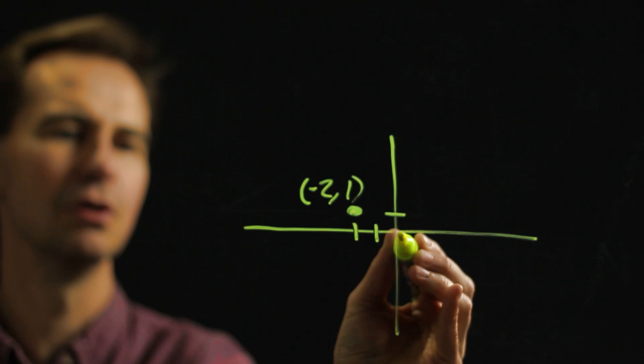So let's say we have a grid and let's say we have a couple of points on this grid. Maybe one of them is here at a point of negative two, one, so two units to the left and one up.